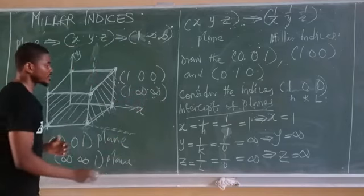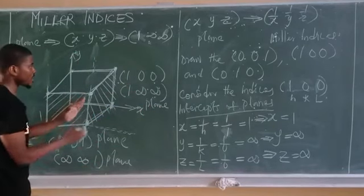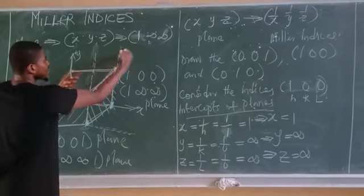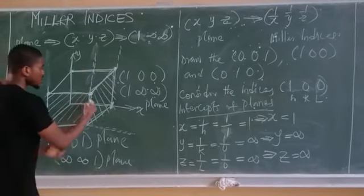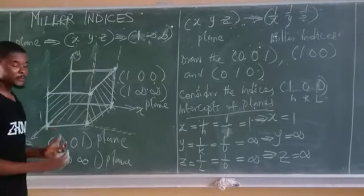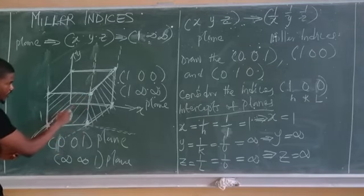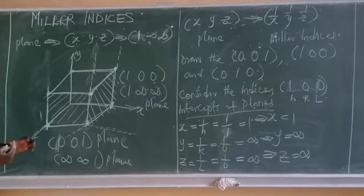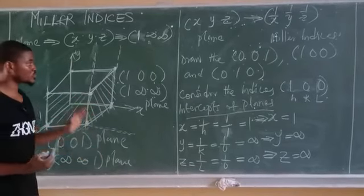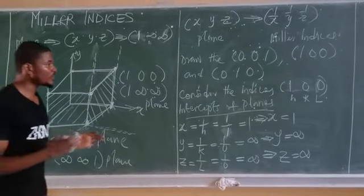This plane exists only in the x direction and can never cut across the y direction. If you trace the plane upward, the y direction lines can never intercept each other — they remain parallel. The same applies in the z direction. This plane only exists where the x direction is, and that is the (100) plane.